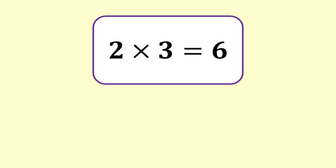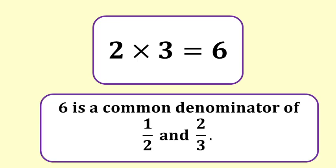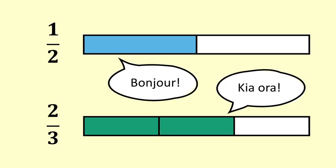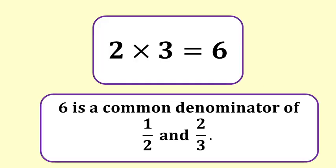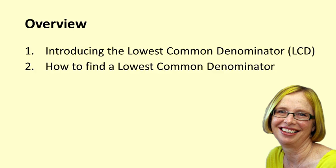A good way to find a common denominator is to multiply the two denominators. Two times three equals six, so we will use six as the common denominator. Once the two fractions have been converted to sixths they are ready to add. Six is a common denominator of one half and two thirds. Often the common denominator we get by multiplying the denominators is just fine.